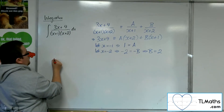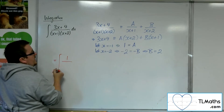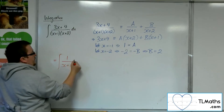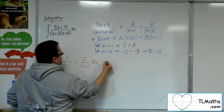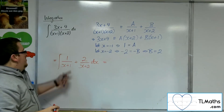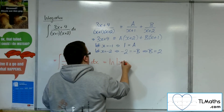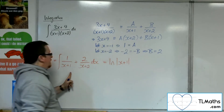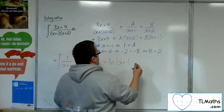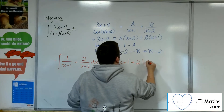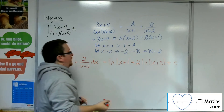This integral is the same as integrating 1 over (x + 1) — that's the A — plus 2 over (x + 2), dx. Now 1 over (x + 1) integrates to log|x + 1|, and 2 over (x + 2) integrates to 2 log|x + 2|, plus a constant of integration C.